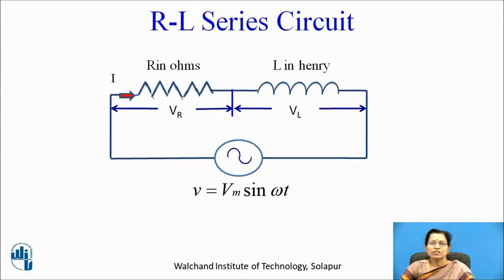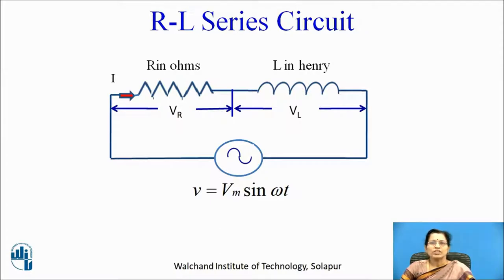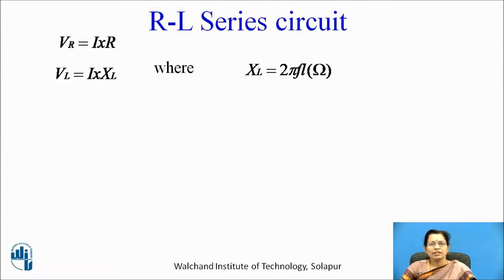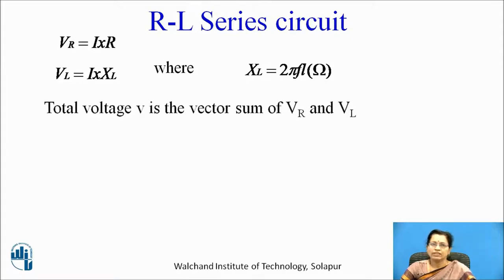Resistor and inductor both are connected in series. Vr is the voltage across the resistor and Vl is the voltage across the inductor. R is measured in terms of ohms, and inductance L is measured in terms of Henry. V equals Vm sin omega t — AC voltage is connected across the RL series circuit. Vr is given by I into R, and Vl is given by I into Xl, where Xl equals 2 pi f L, measured in terms of ohms, where f is the frequency and L is the inductance in Henry.